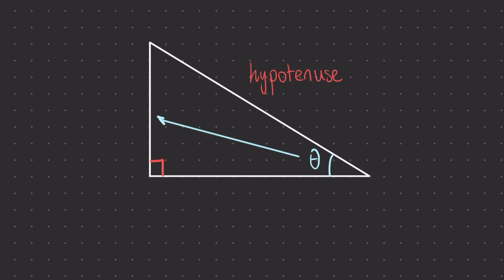The side that is opposite the angle that we're focused on is called the opposite side. And the remaining side, which is next to the angle that we're focused on, is called the adjacent.